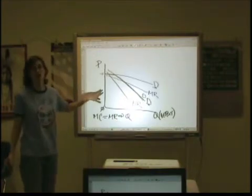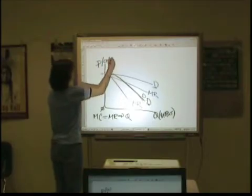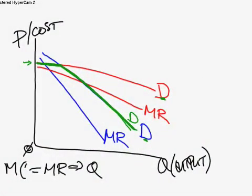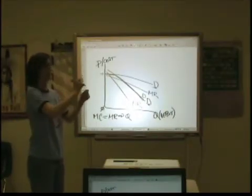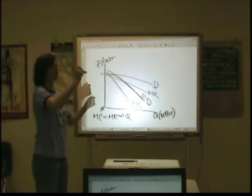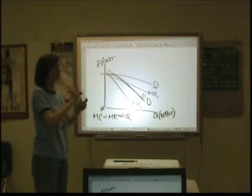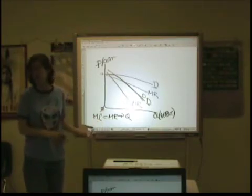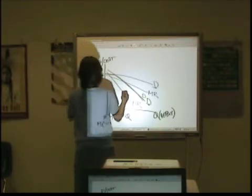We don't have any marginal cost up here yet, so we can add that in. Marginal cost is going to look like some kind of an upward sloping line. With this one, we don't need to worry about it hitting the bottom point because we don't have any other curves on here. So let's put in a couple of marginal cost curves.